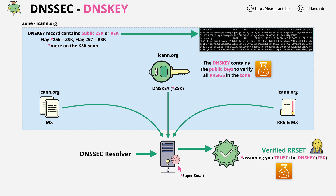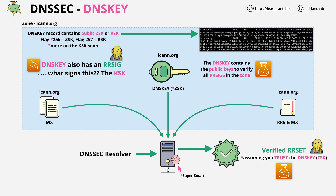The DNSKEY record also requires a signature — a matching RRsig record to validate that it hasn't been changed. The DNSKEY records are signed with a different key: the key signing key, or KSK. As the name suggests, this key isn't used for signing anything in the zone — instead it's used for signing keys. The zone signing key is used for signing everything in a zone, creating most RRsig records, except the DNSKEY records. Those are signed by the key signing key, creating the DNSKEY RRsig record.